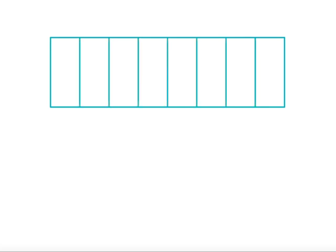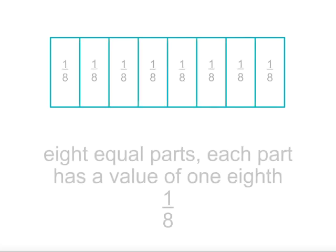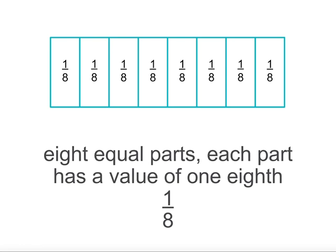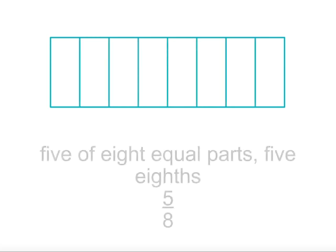If we divide the bar into eight equal parts, each part has a value of one eighth, which we represent as one over eight. To represent five eighths, we again divide the fraction bar into eight equal parts, then shade in five of them. This shows five eighths, or five over eight.